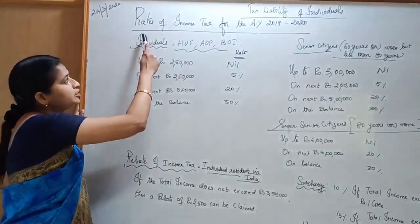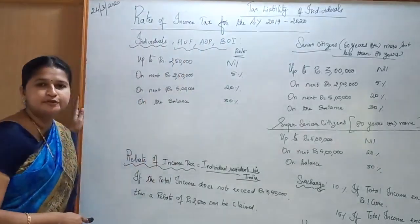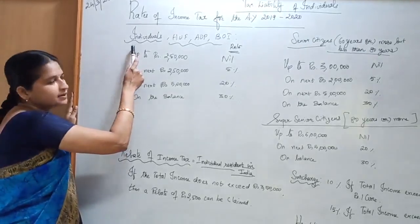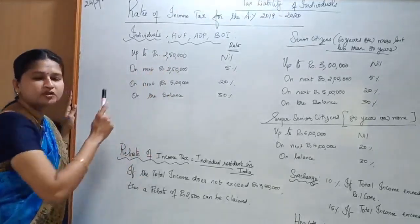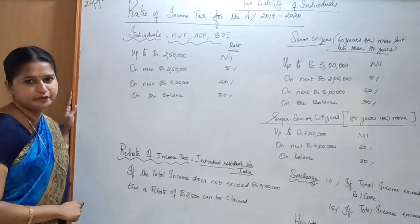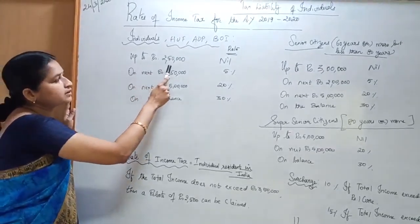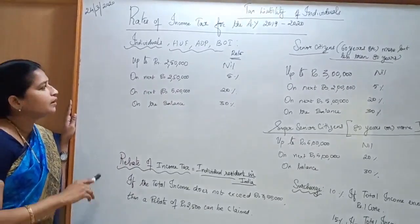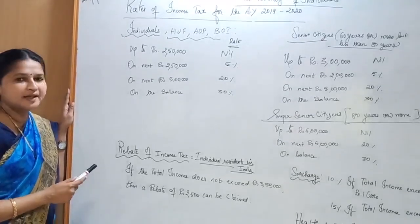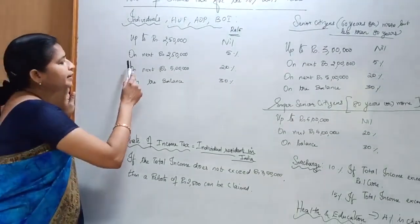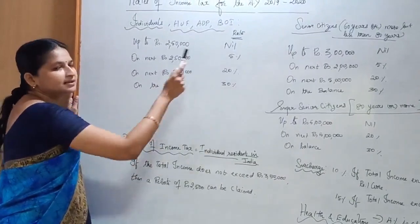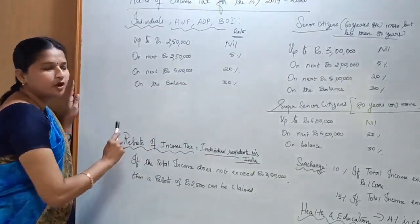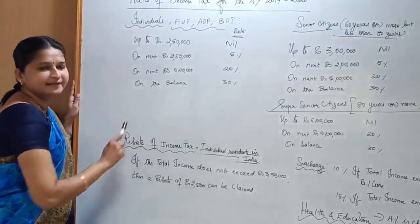We are going to see the rates of income tax for the assessment year 2019-2020. For individuals, Hindu Undivided Family, Association of Persons, and Body of Individuals: up to Rs. 2,50,000 the income tax rate is nil. On the next Rs. 2,50,000 the rate is 5%. On the next Rs. 5,00,000 the rate is 20%, and on the balance income the rate is 30%.